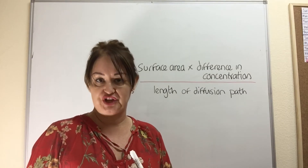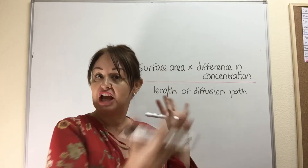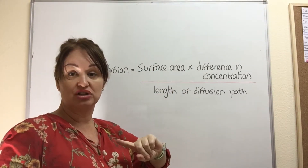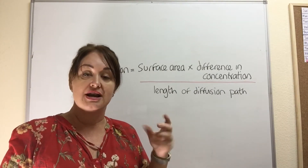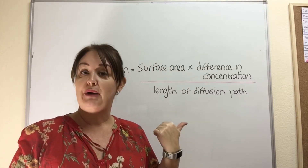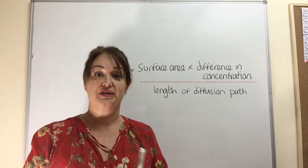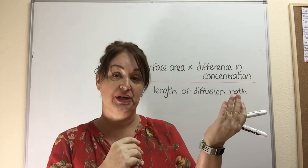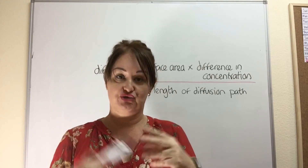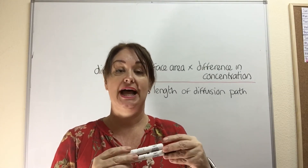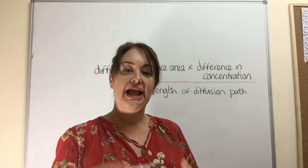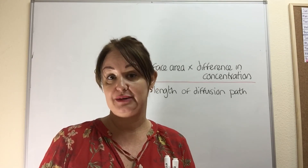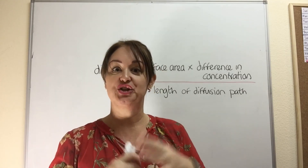To compare the relative efficiency of different gas exchange systems, we can use Fick's Law: diffusion equals surface area times the difference in concentration, divided by the length of the diffusion path. You wouldn't be expected to remember that formula, but you might be given it in an exam and asked to work with it using given data. Before moving on, check whether you can compare the structural differences between the trachea and bronchioles, relate structure to function, explain how the alveoli are protected, and list the correct sequence of structures air passes through when you breathe in. Then go and watch the lung dissection video to see all these structures in real life.